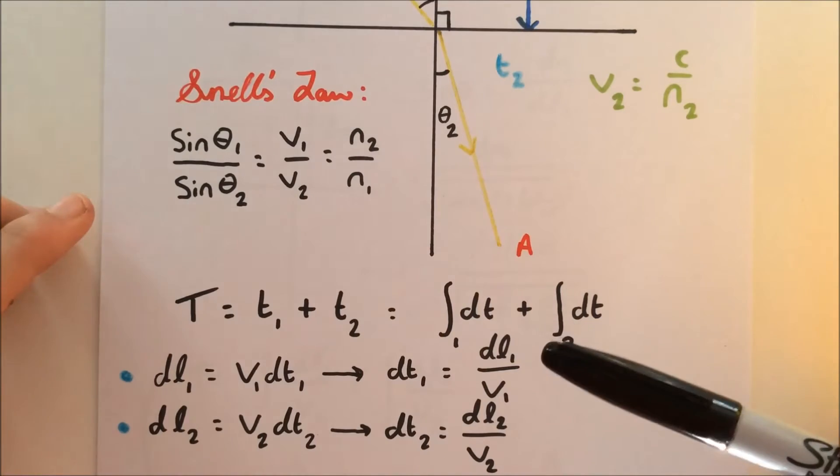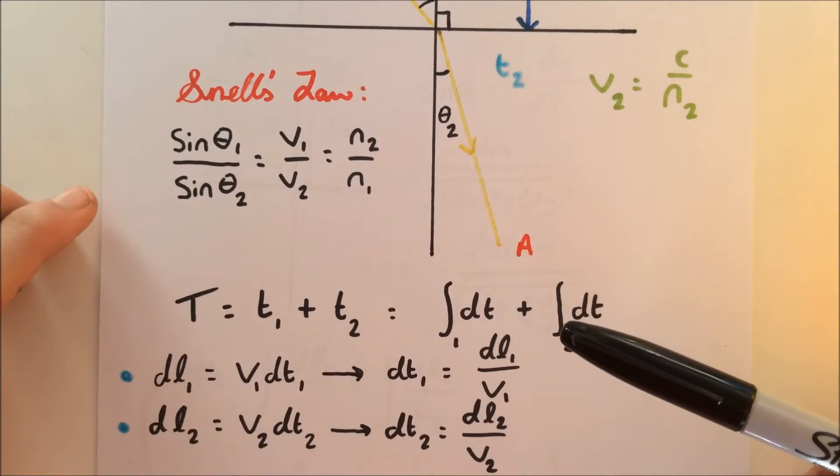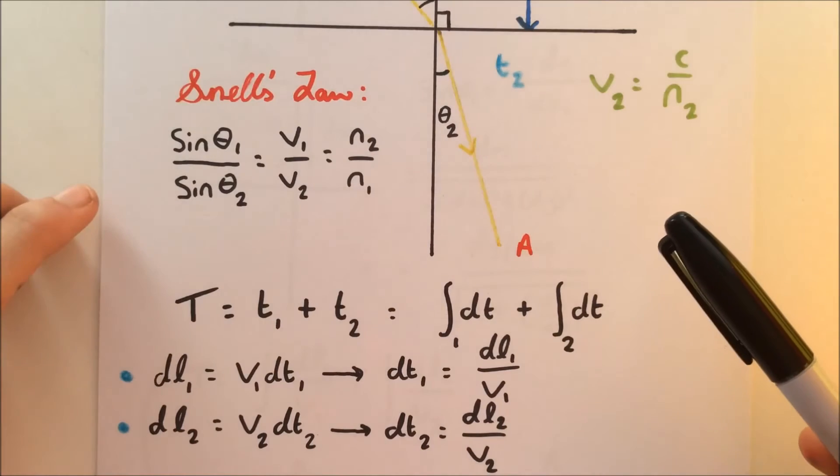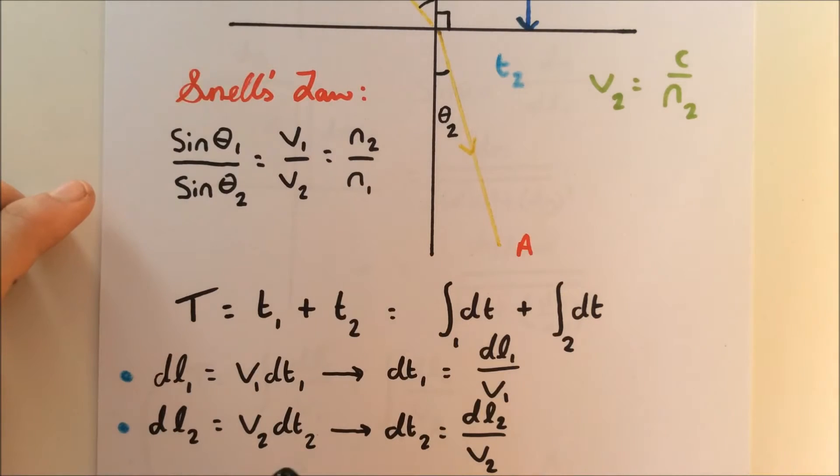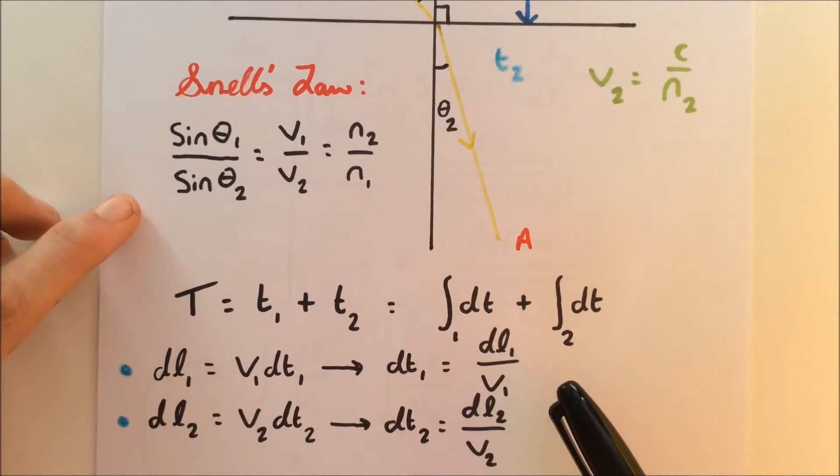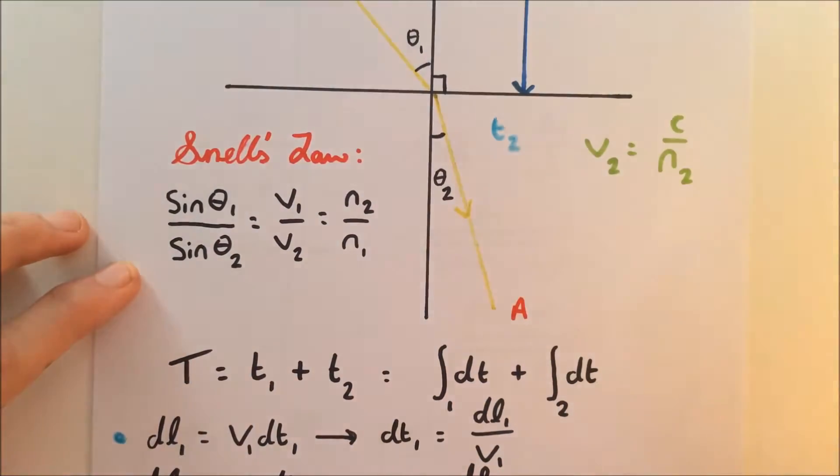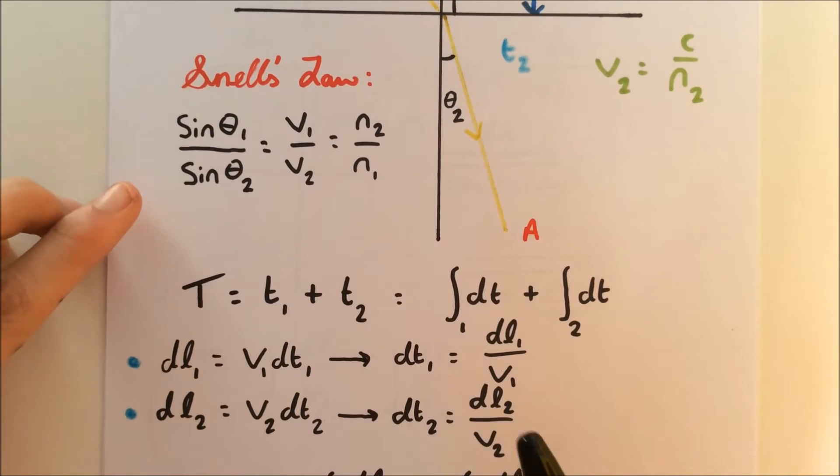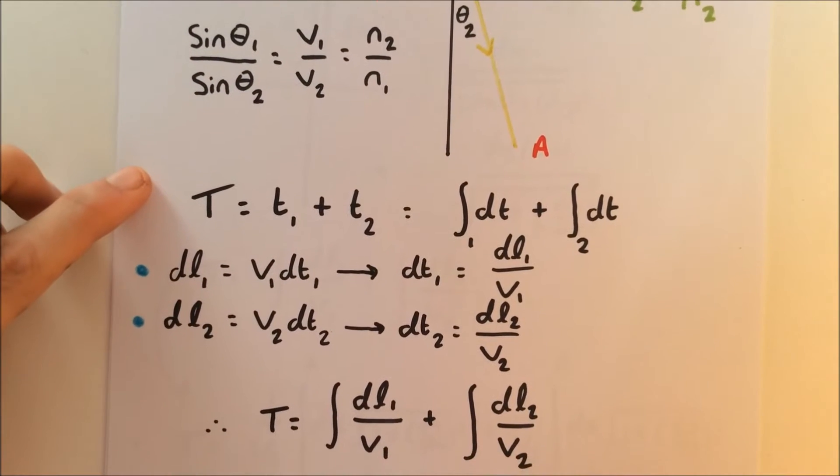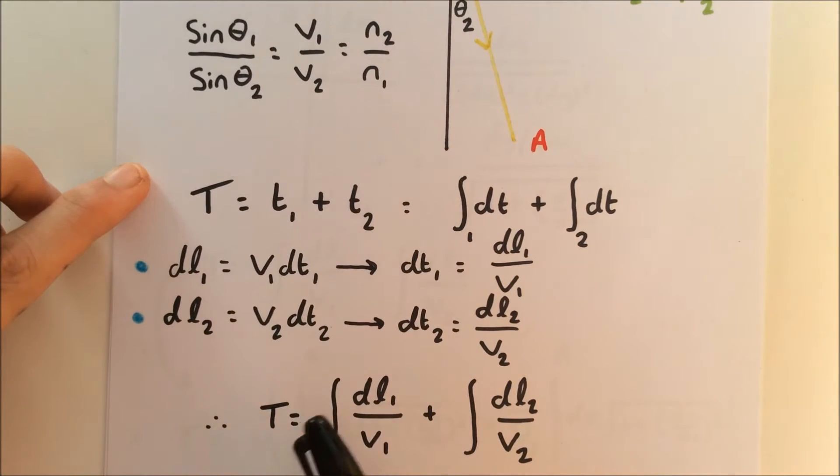Now what about an infinitesimal distance on the path of the light ray? Well, DL1 can be a small distance, and it's simply the velocity multiplied by time. We can rearrange to find DT1 in terms of distance and velocity. And we can do that for the same in medium 2, an infinitesimal distance along the path of the light ray, DL2, in the same format: DL2 divided by the velocity in 2. And then finally, we can therefore say the total time is the integral of DL1 divided by V1 plus the integral of DL2 divided by V2.